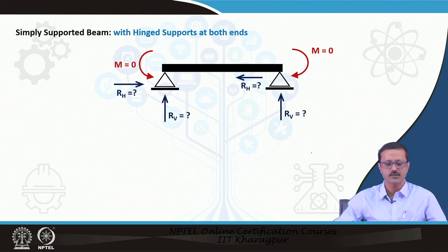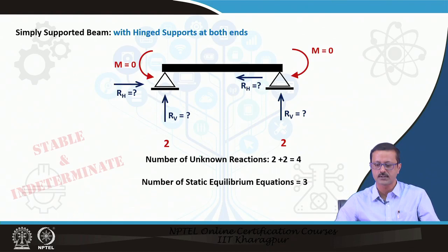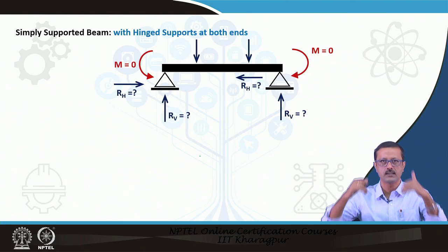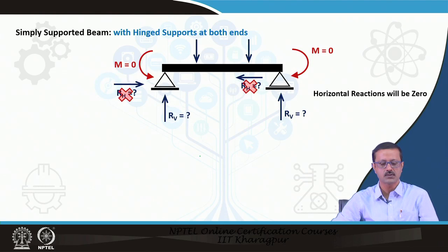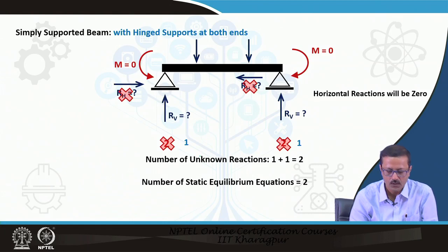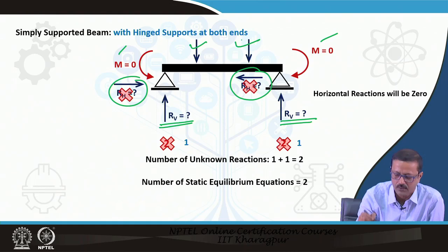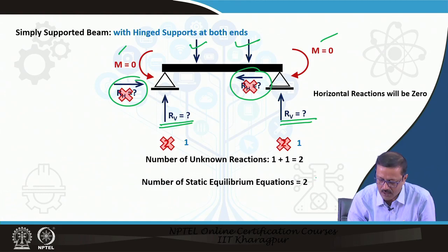We will discuss indeterminate structures afterwards. If both ends are hinged, there are 2 + 2 = 4 unknowns and 3 equations, making it also indeterminate. However, if the beam carries only downward (gravity) load, horizontal reactions vanish, leaving 1 + 1 = 2 unknowns and 2 applicable equations (sigma Fy and sigma M), making it determinate.